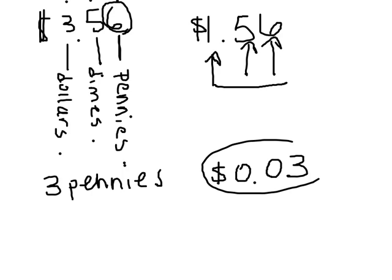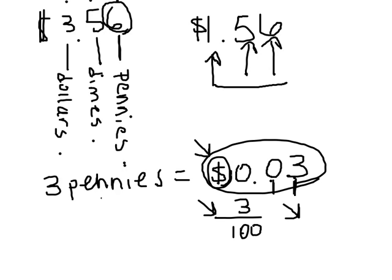And how do I write this as a fraction? I have three hundredths. Because this is tenths. This is hundredths. So three pennies would be written like this in money. Like this in a fraction. And if you were to write it as a decimal, you would just take off this dollar sign, 0.03.